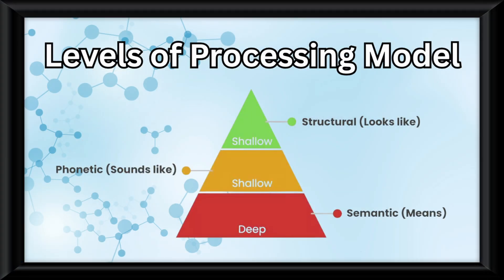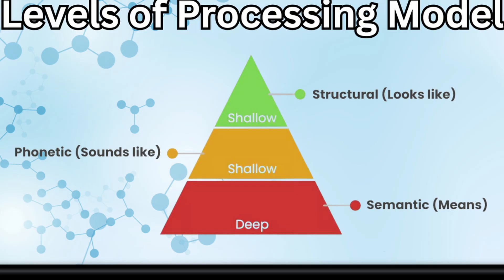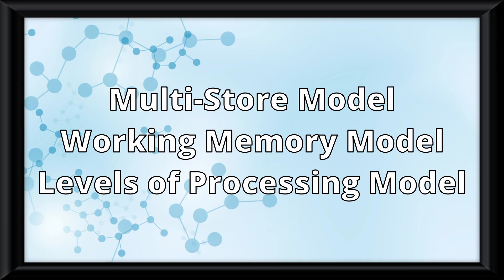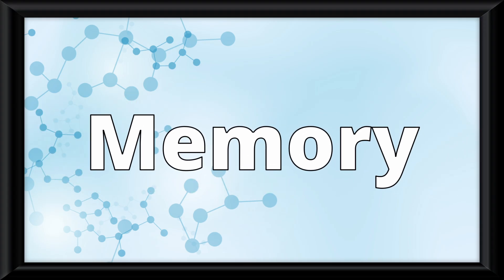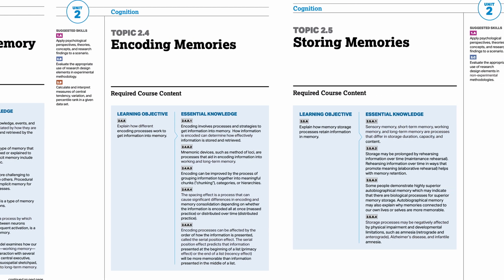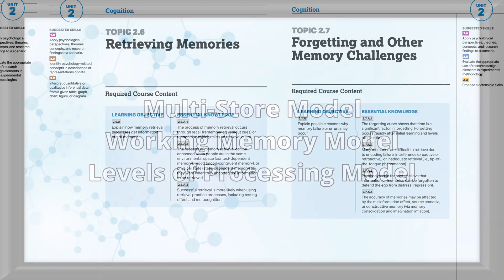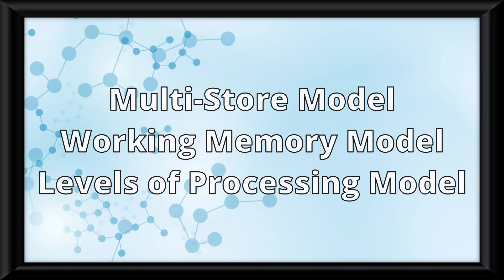The levels of processing model introduced a hierarchy on how info is processed deeper, saying that semantic does better than phonemic and structural. So which one of these models is correct? The answer is actually all of them for the most part. Memory is obviously a lot more complex than simple diagrams, which is why there are five different videos that AP Psychology dedicates to it. But these models are a great way to understand the basic parts of them.